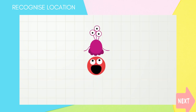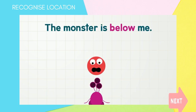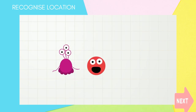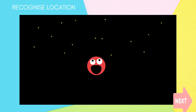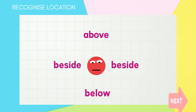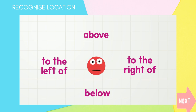The monster is above me! And now the monster is below me! Above, below! So you see, all of these words — beside, above, below, to the left of, and to the right of — these are all great words to say where something is. Location!